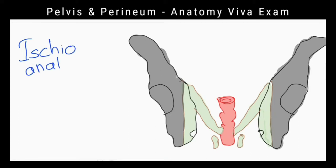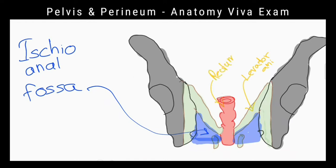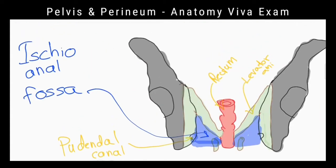Laterally fascia covering the medial surface of obturator internus muscle, medially fascia over levator ani and external anal sphincter, floor is formed by skin and subcutaneous fat, posteriorly sacrotuberous ligament, anteriorly by urogenital triangle. What are the nerves and vessels across the fossa? Inferior rectal vessels and nerves.